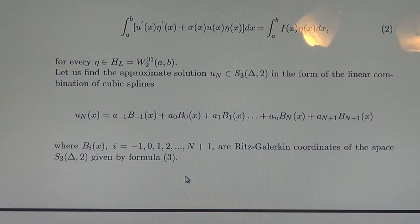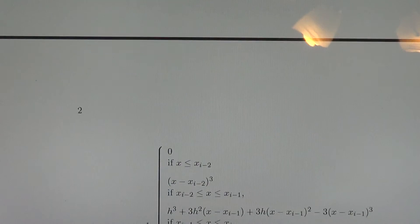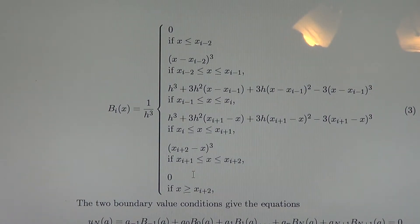We know these B-functions from the previous lectures; we call them Galerkin-Ritz coordinates. The formula for B-functions gives a piecewise cubic spline which is twice differentiable on the whole interval (a, b), including the points of the partition.